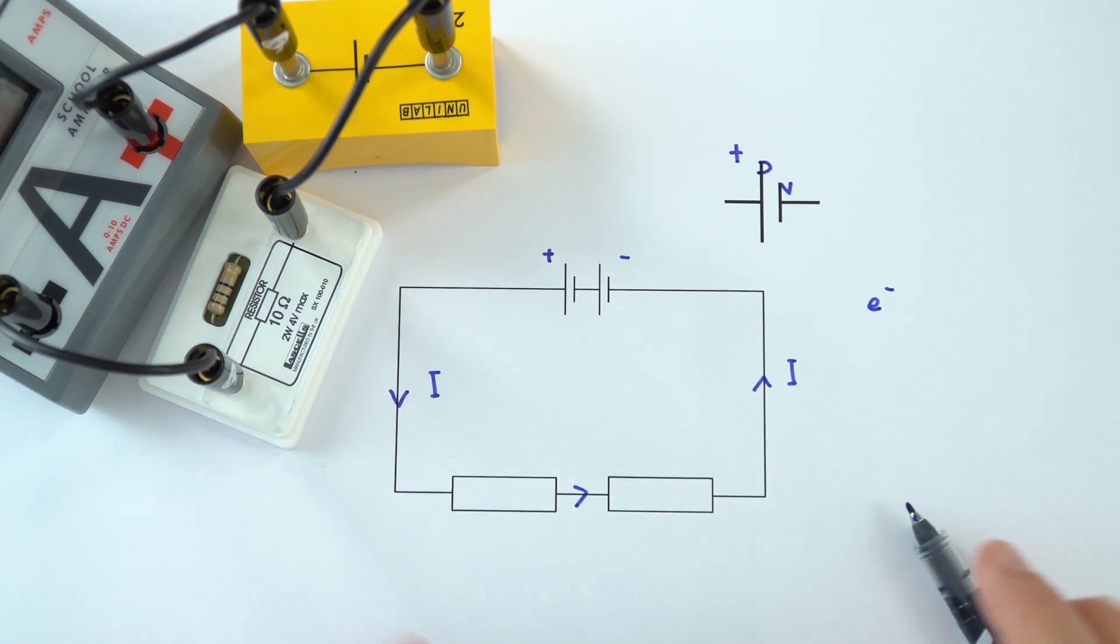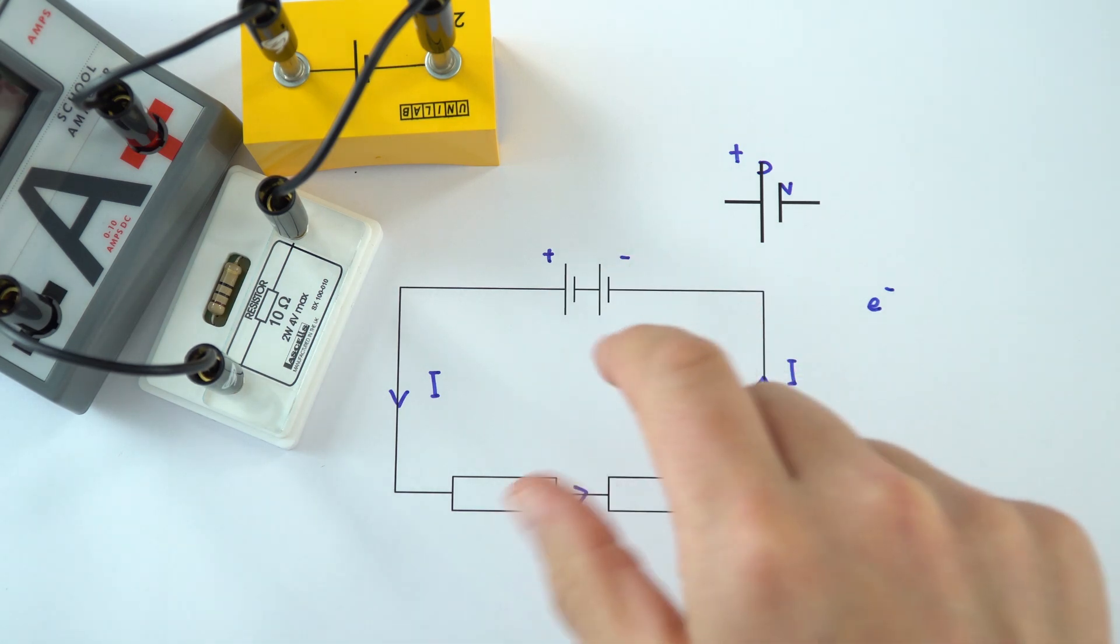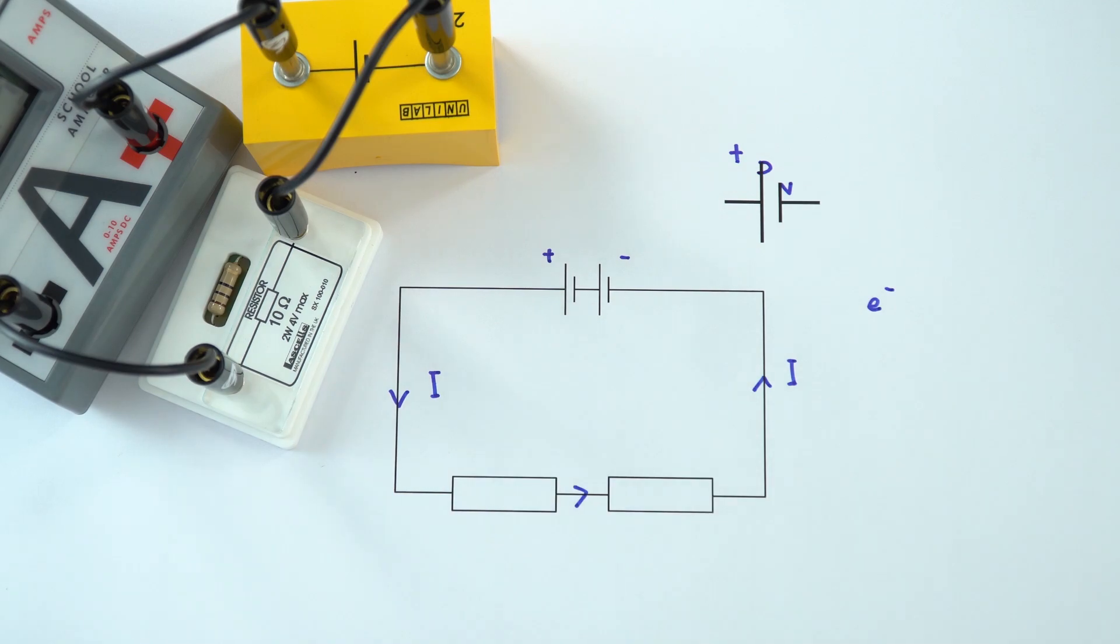So just to summarize, the conventional current goes from positive to negative, but the actual electrons, the things which are actually moving, are going from the negative to the positive end of that circuit.